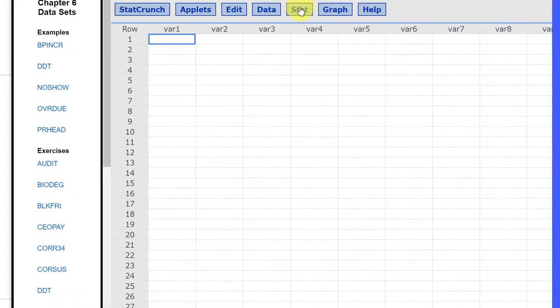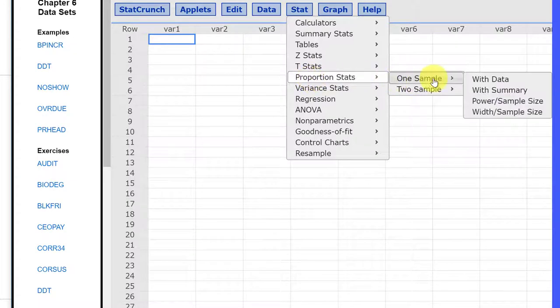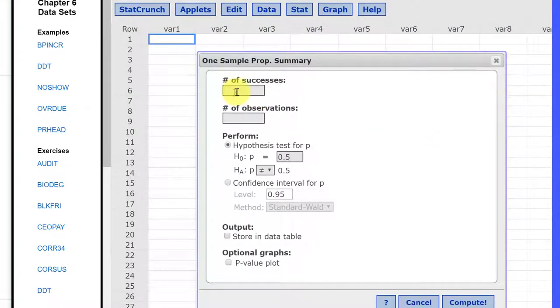All we need to do is go to Stat, look down for proportion statistics. This is one sample and we have summary since we have the number of successes which is 100 and the N, the count, was 1,000.